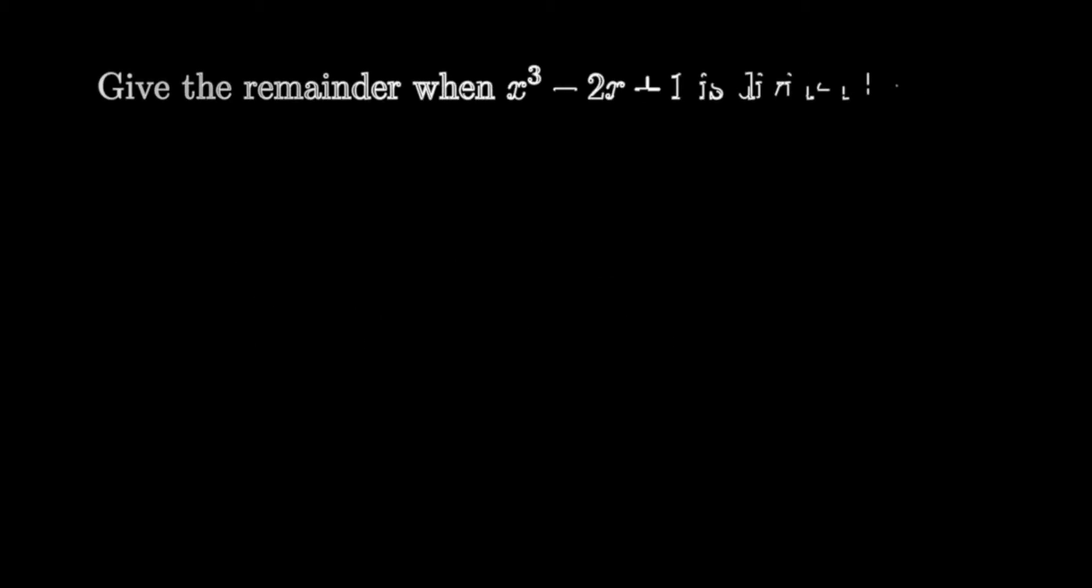Problem 1. Give the remainder when x cubed minus 2x plus 1 is divided by x plus 5. One way to look at this problem is to take a step back and ask, what is division? To do this, let's first look at the example of 10 divided by 4.